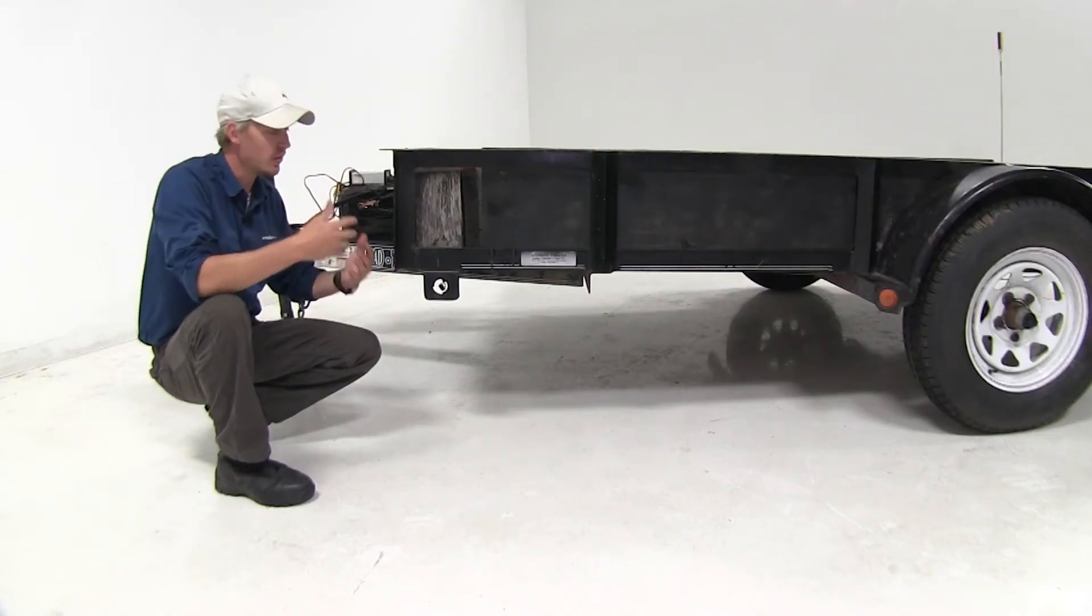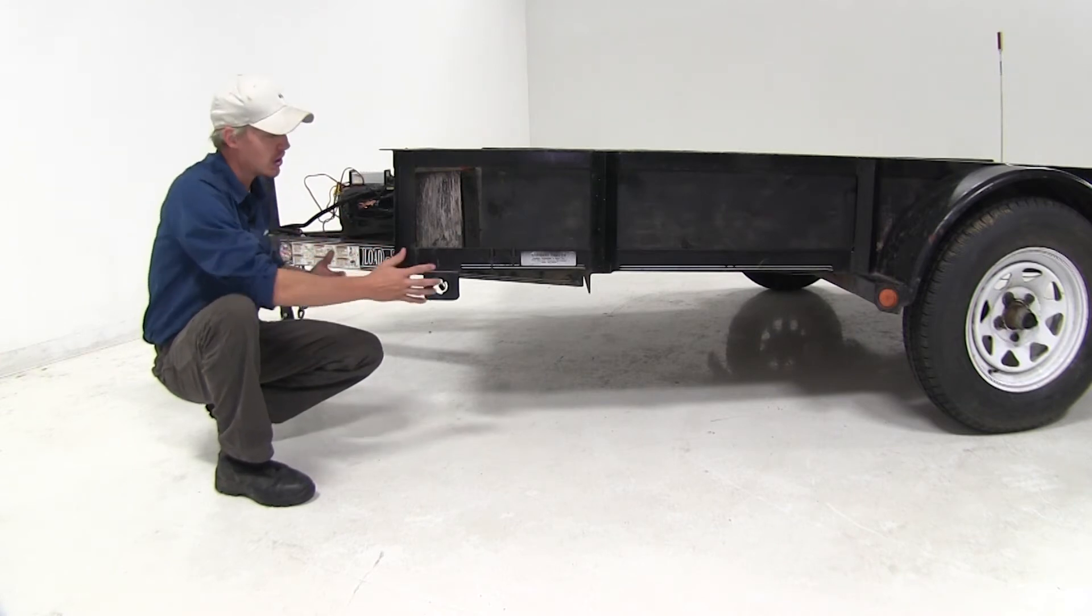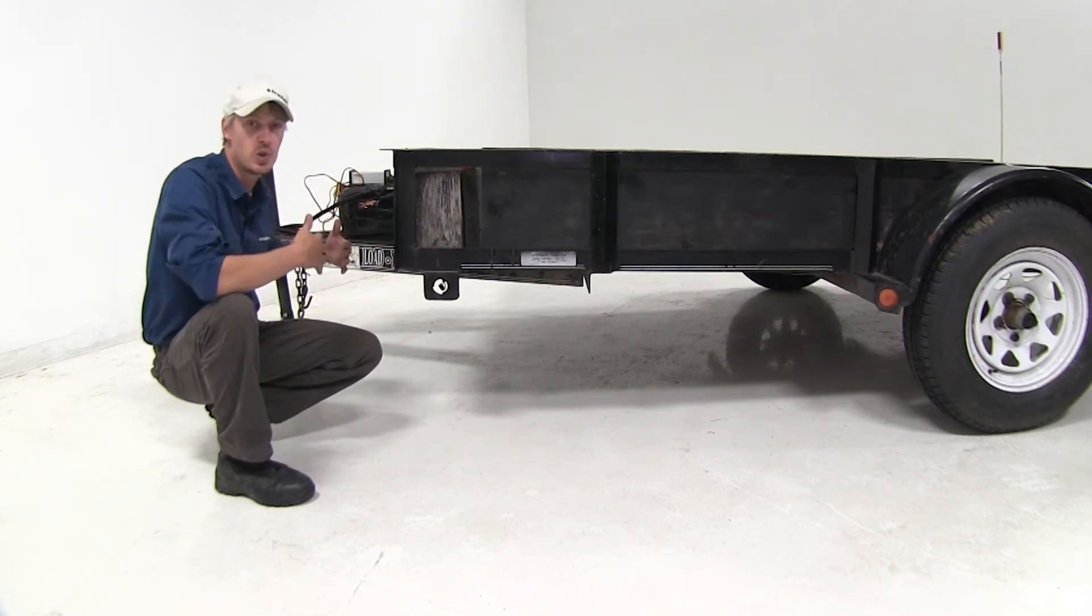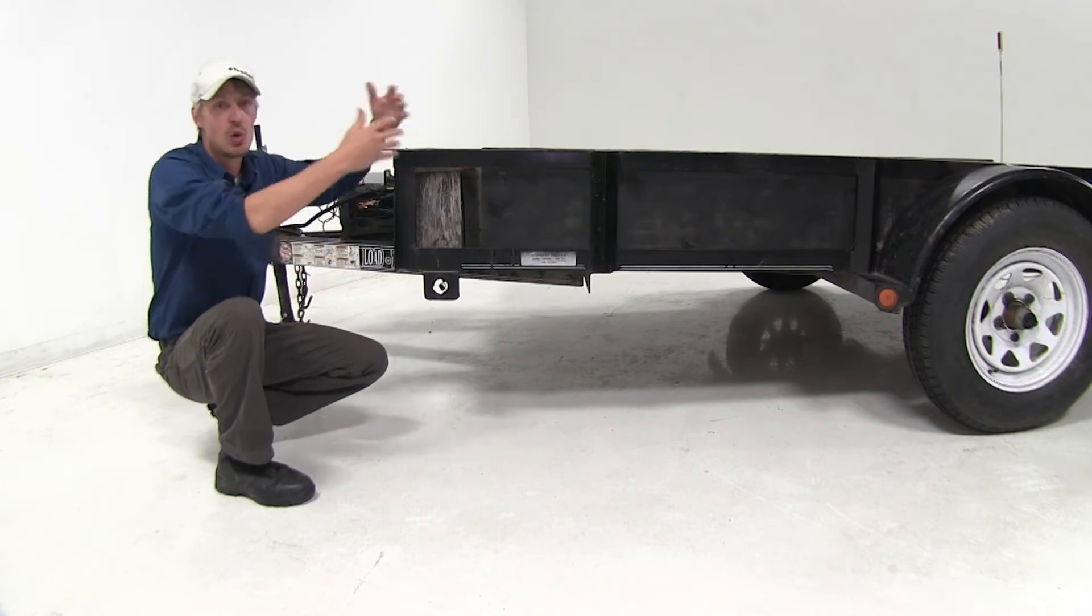Now when installing trailer lights, it's important to remember that your amber lights are going to go on the side or in the front of your trailer, and that your red lights are going to go towards the back.